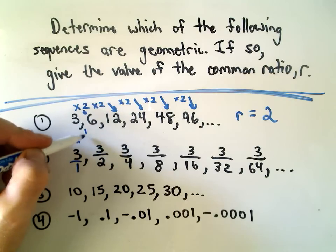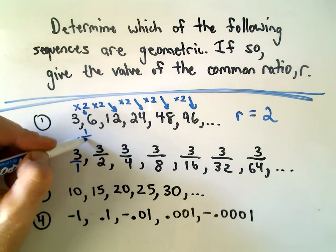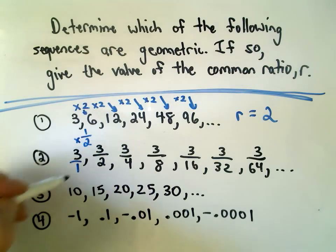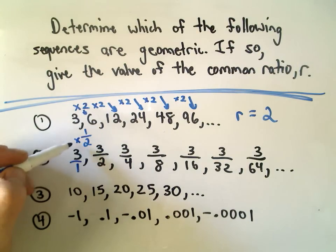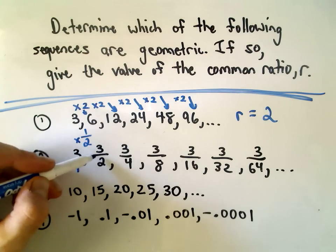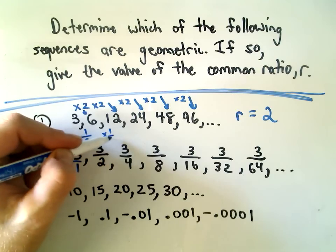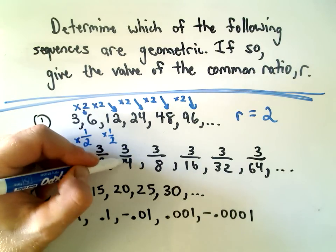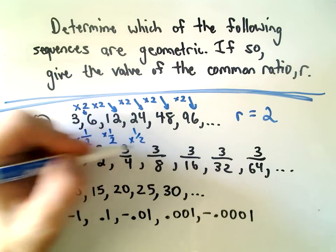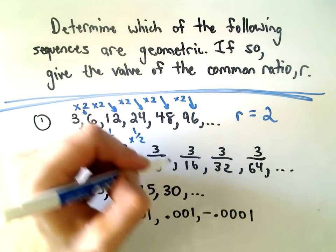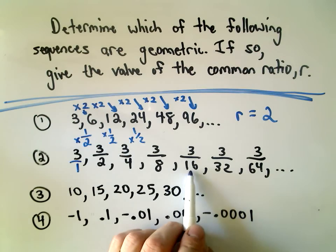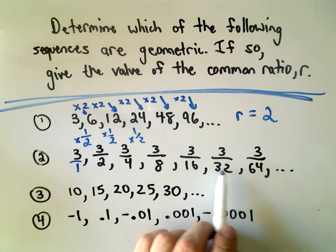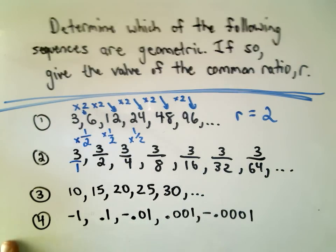It looks like we're multiplying the top by 1, not changing its value, but we're multiplying the bottom by 2. So 3 times a half is going to give you 3 halves. Notice if you multiply 3 halves by 1 half, you'll get 3 on top, but now 4 on the bottom. If we multiply by 1 half, we'll get 3 eighths. If we multiply by 1 half, we'll get 3 over 16, 3 over 32, 3 over 64.